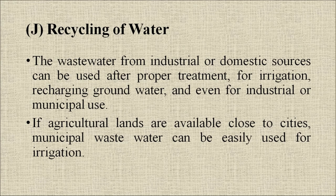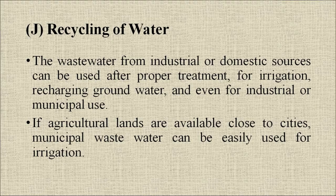Recycling of water: waste water from industrial or domestic sources can be used after proper treatment for irrigation, recharging groundwater, and even for industrial or municipal use. If agricultural lands are available close to cities, municipal waste water can be easily used for irrigation. Conservation of water in domestic use.